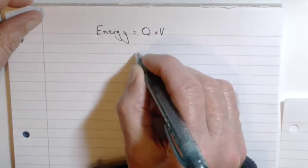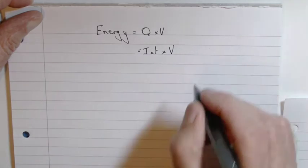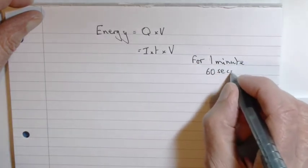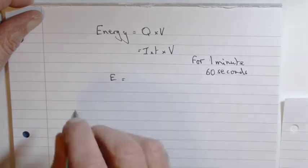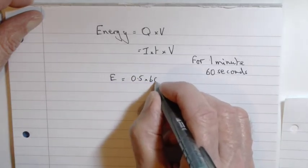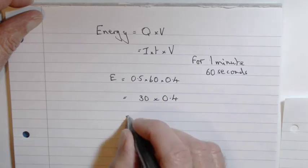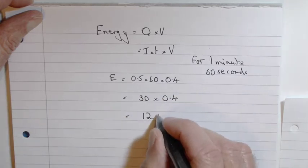So if we wanted to calculate the amount of energy in one minute—one minute is 60 seconds—so it is current 0.5 times 60 times 0.4. 0.5 times 60 is 30, and then multiplied by 0.4 is 12. That's 12 joules.